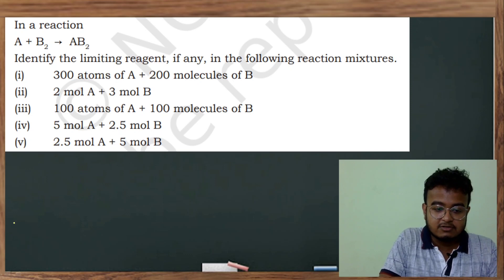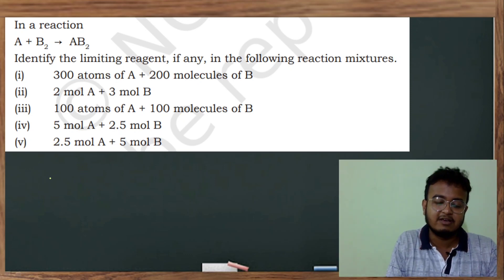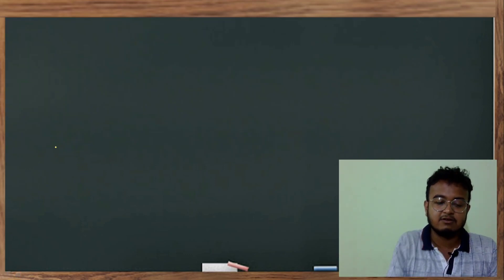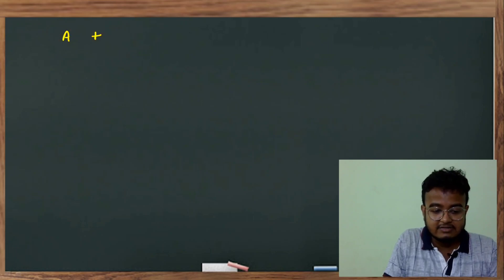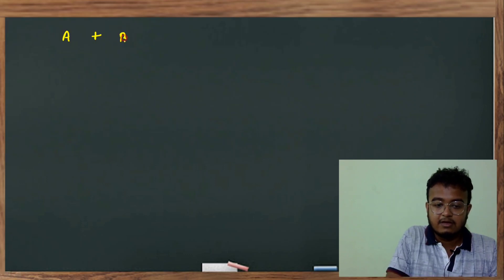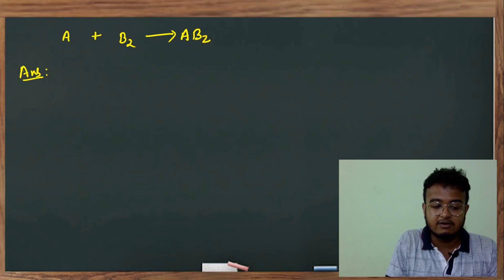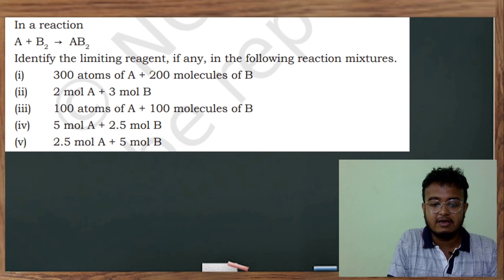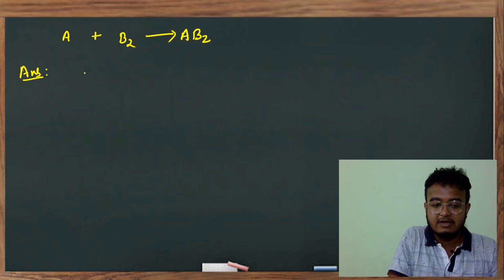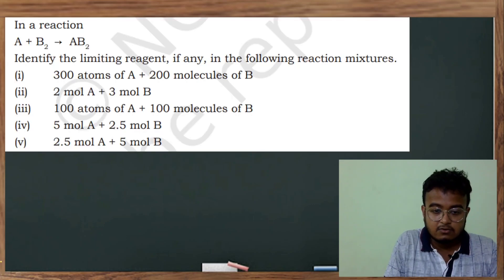So the first question is: identify the limiting reagent. Limiting reagent — I hope you will have a background on this for the first question. We will have a reaction: A + B2 goes to AB2. We are given 300 atoms of A and 200 molecules of B2.